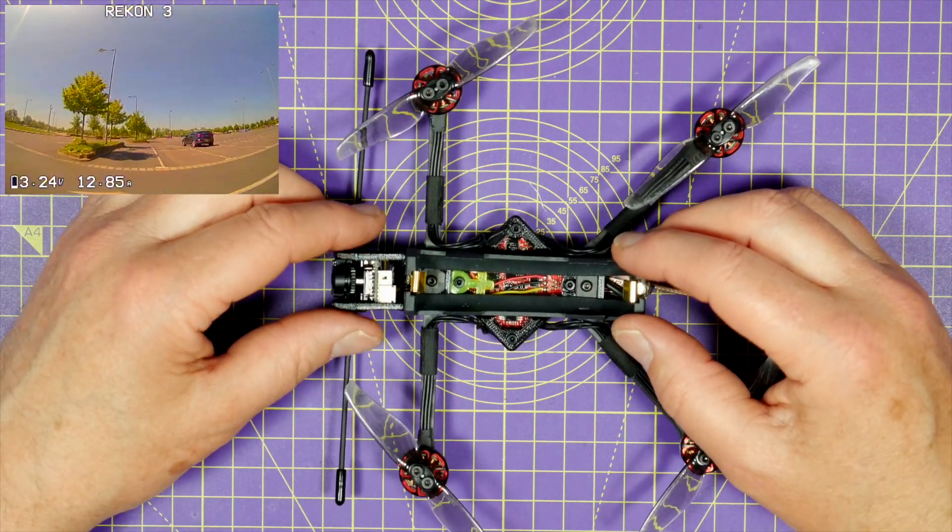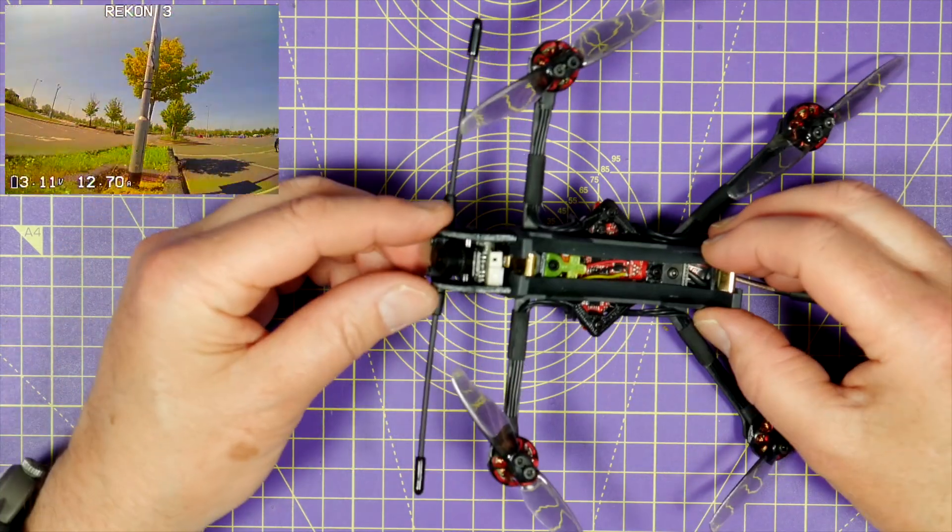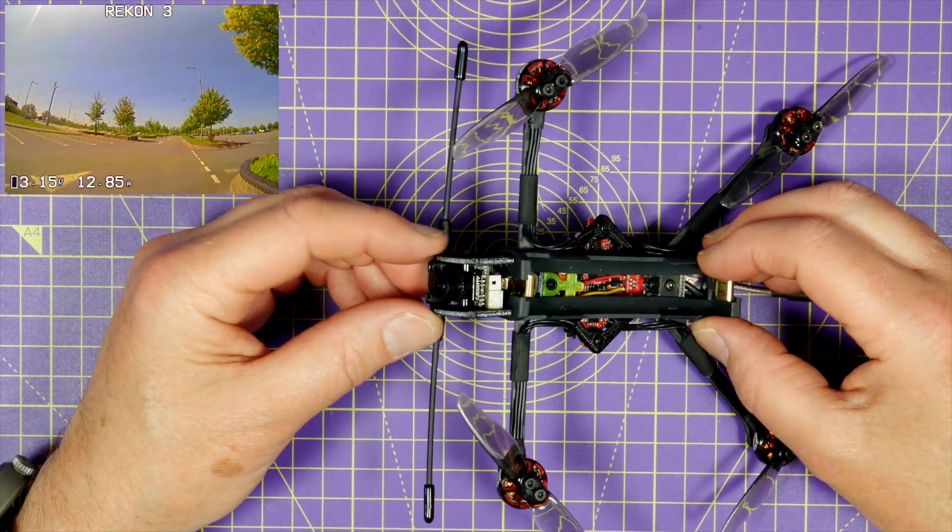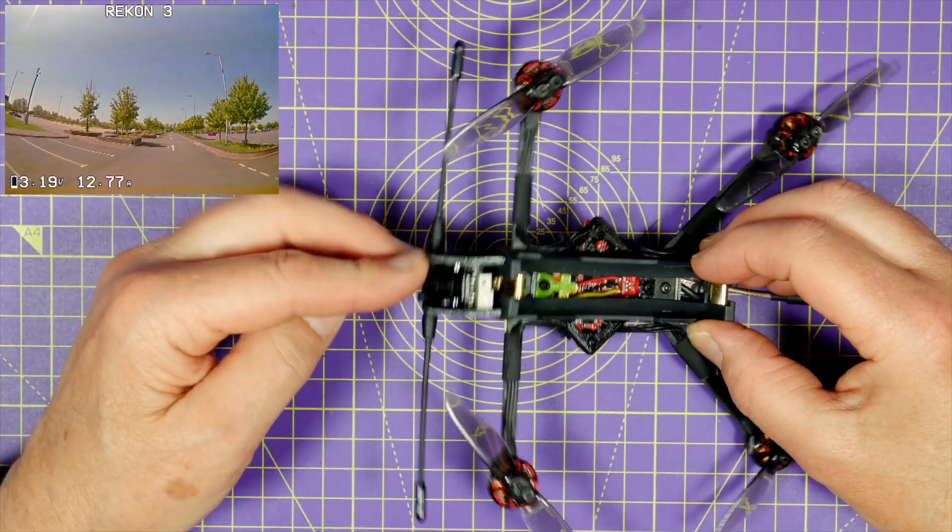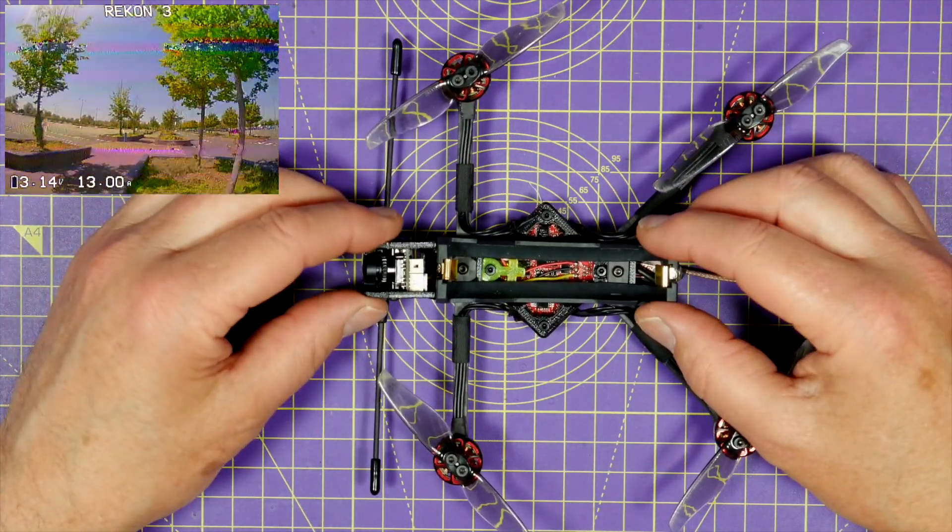The price on this is about £145, which is around $190 for this Crossfire version. And the XM Plus receiver option is cheaper, about £130. But I'll leave links in the description so you can check out the latest prices.